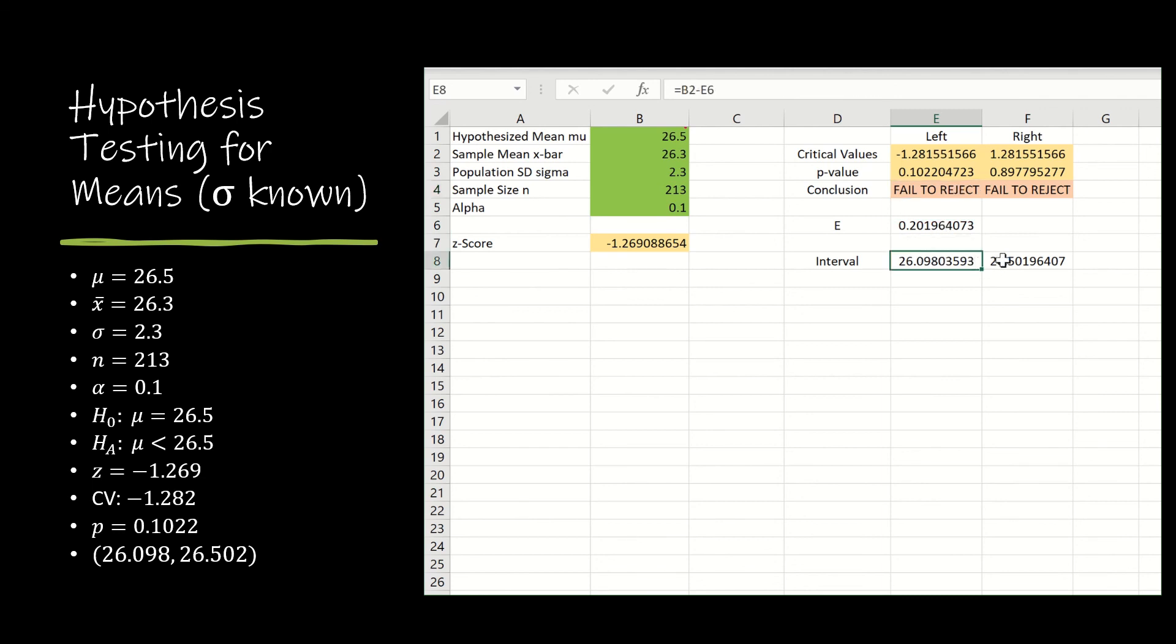And our interval also matches what we had found and does include the value of 26.5, the hypothesized value, which supports failing to reject the null.